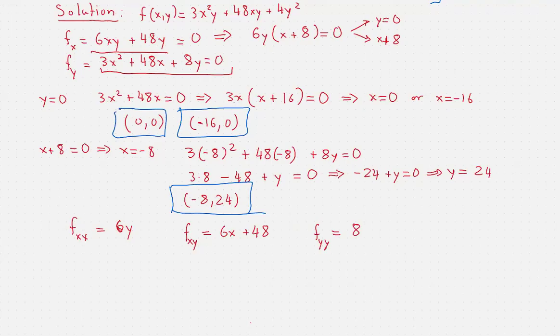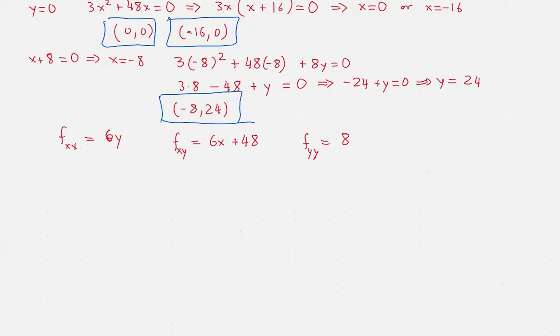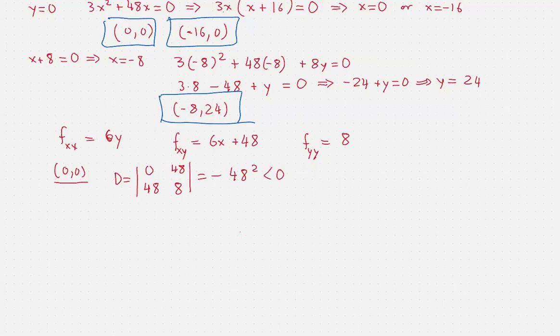Let's take it point by point. If we start with (0,0), what is D? D will be f_xx at (0,0), so 6 times 0 is zero. f_yy is 8, which doesn't change. f_xy at (0,0) is simply 48. So this will give me minus 48². I don't care how much it is - all I care about is that it's less than zero, which means this is a saddle point or pringle. This means we have no local extremum here.